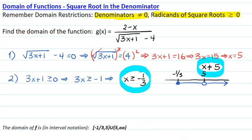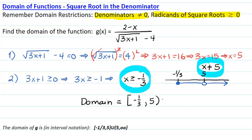This makes the domain of the function equal to closed at negative 1 third comma 5 open, union 5 comma infinity.